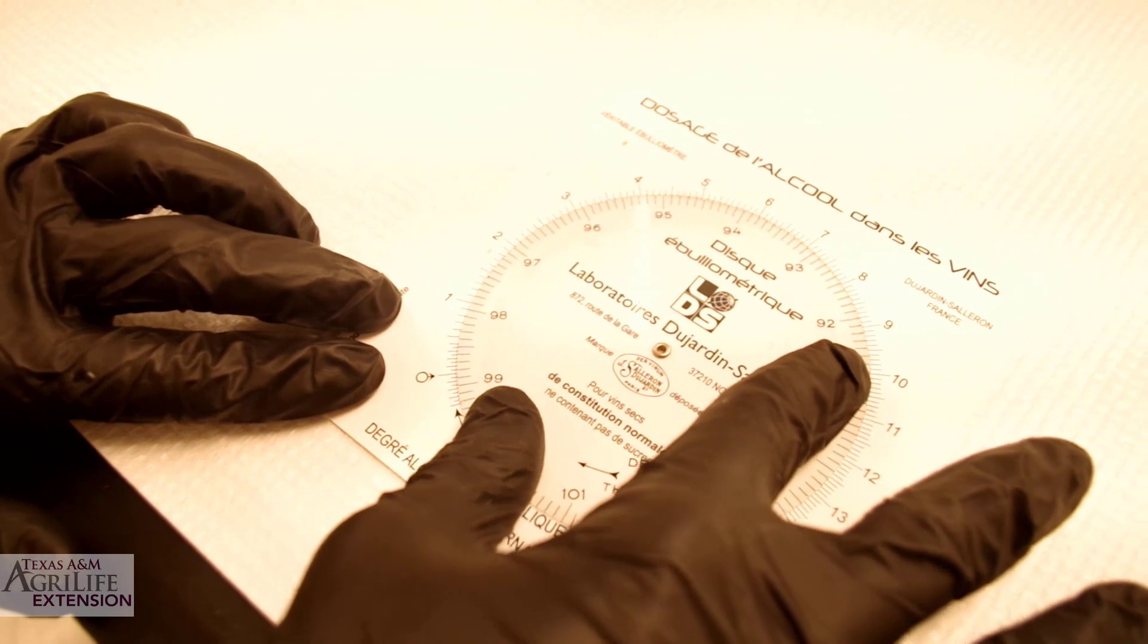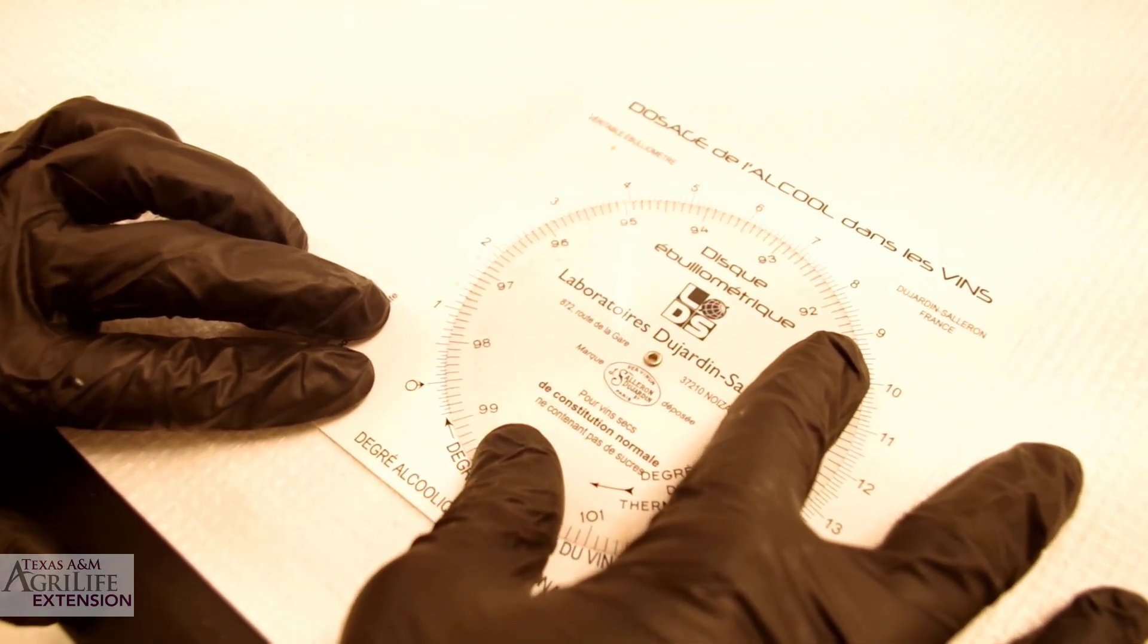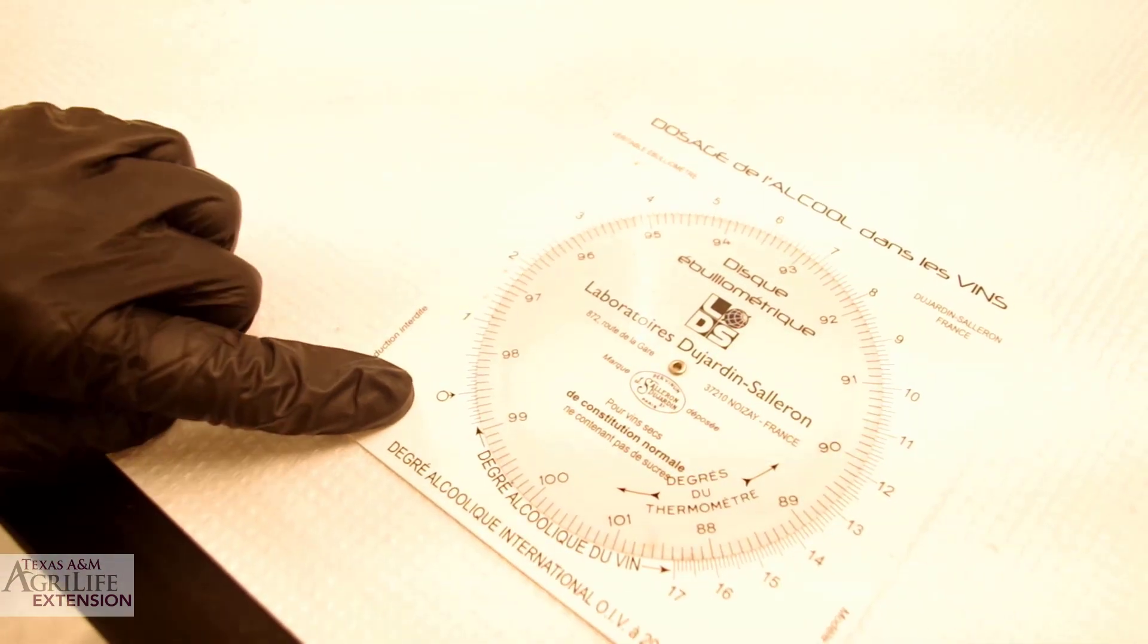On the dial, we line up our temperature, 98.5, to the symbol with a circle and arrow.